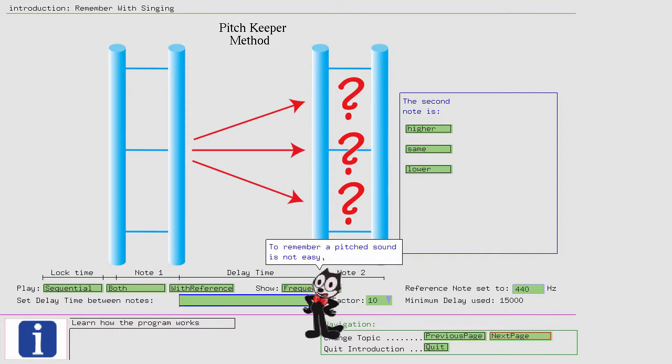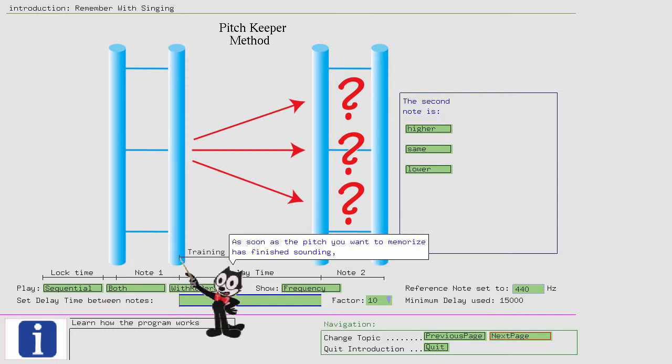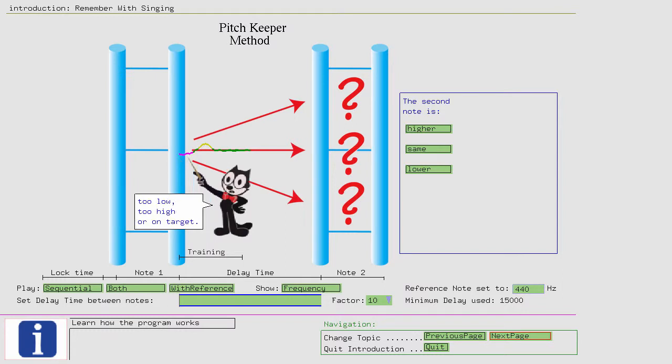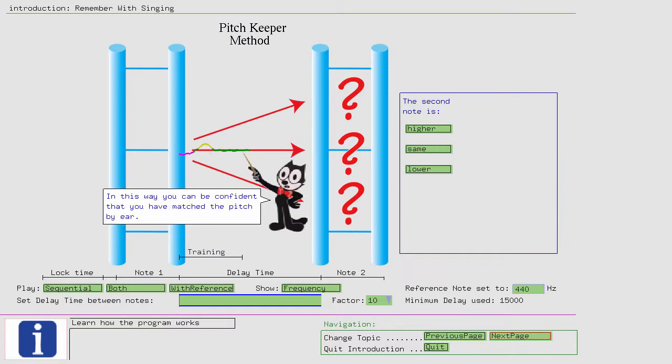To remember a pitched sound is not easy, so we help you to actively grasp the sound. That is, we encourage you to take over the pitch to your voice by singing it. As soon as the pitch you want to memorize has finished sounding, you sing that pitch back. The program will give you the necessary feedback with a colored pitch line telling you if you are too low, too high, or on target. In this way, you can be confident that you have matched the pitch by ear.